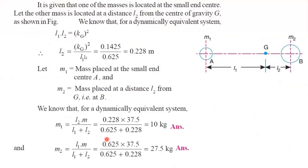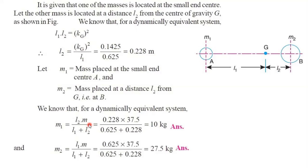It is clearly given that one of the masses is located at the small end center, so the other mass will be located at a distance of L2 from the center of gravity. Using the third condition — L1 × L2 = kg² — we bring L1 to the denominator and substitute known values to get L2. Then, using the formulas for M1 and M2, we substitute all known values and determine the masses M1 and M2.